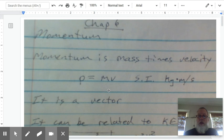As we talked about before, if you take a scalar times a vector, you end up with a vector. So momentum is a vector quantity.